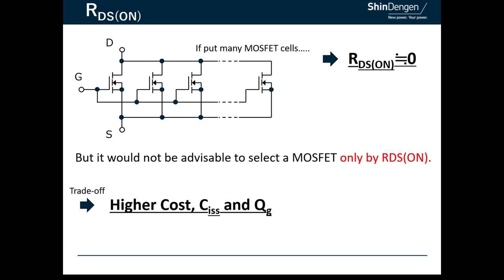The higher CISS and QG, the more loss the MOSFET will have, since it must charge more QG into the gate when it turns on.